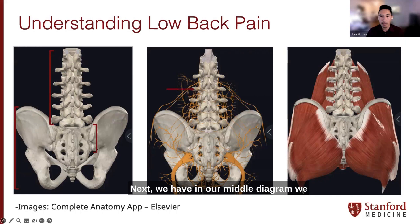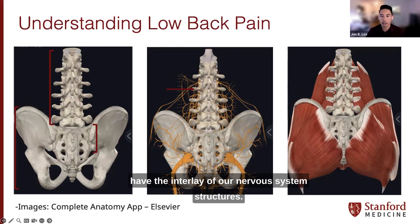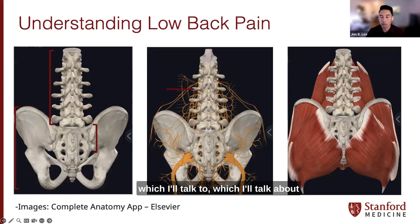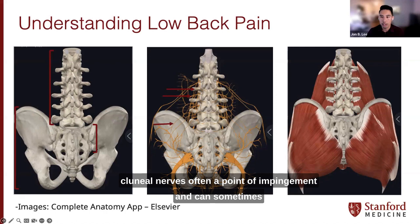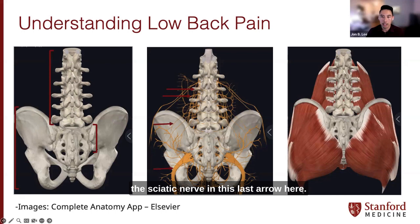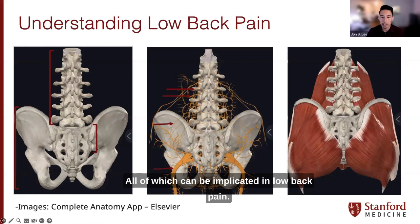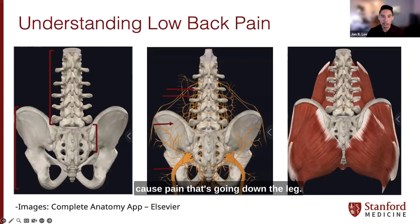In our middle diagram, we have the overlay of our nervous system structures. The first arrow points to our medial branches, which I'll talk about more in depth later. The next is our nerve roots coming out from the spinal column itself. Another one I want to point out is the cluneal nerves — often a point of impingement that can cause pain in the upper buttock region. And one more familiar structure is the sciatic nerve, all of which can be implicated in low back pain.